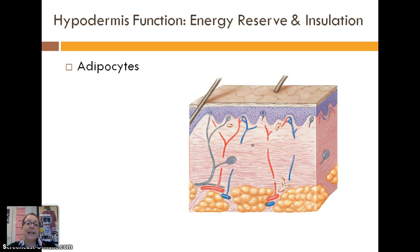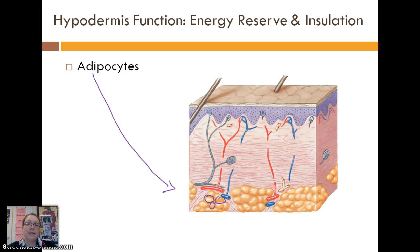The last layer of skin is the hypodermis, and it is filled with adipocytes — those yellow structures shown here — which is simply a fancy way of saying fat cell. Adipocytes serve as an energy reserve, since fat serves that function, as well as providing insulation.